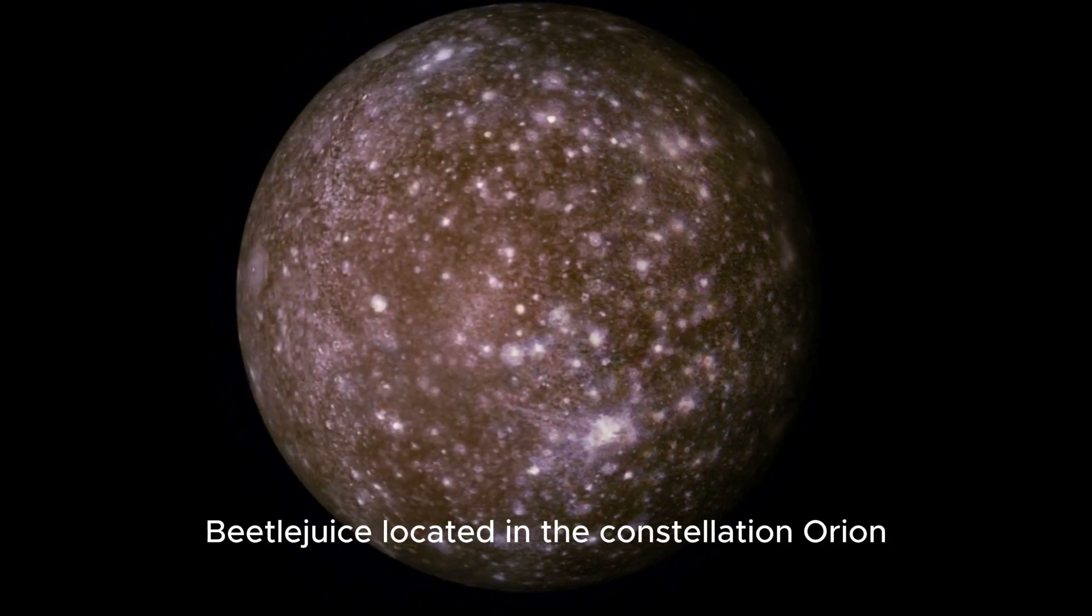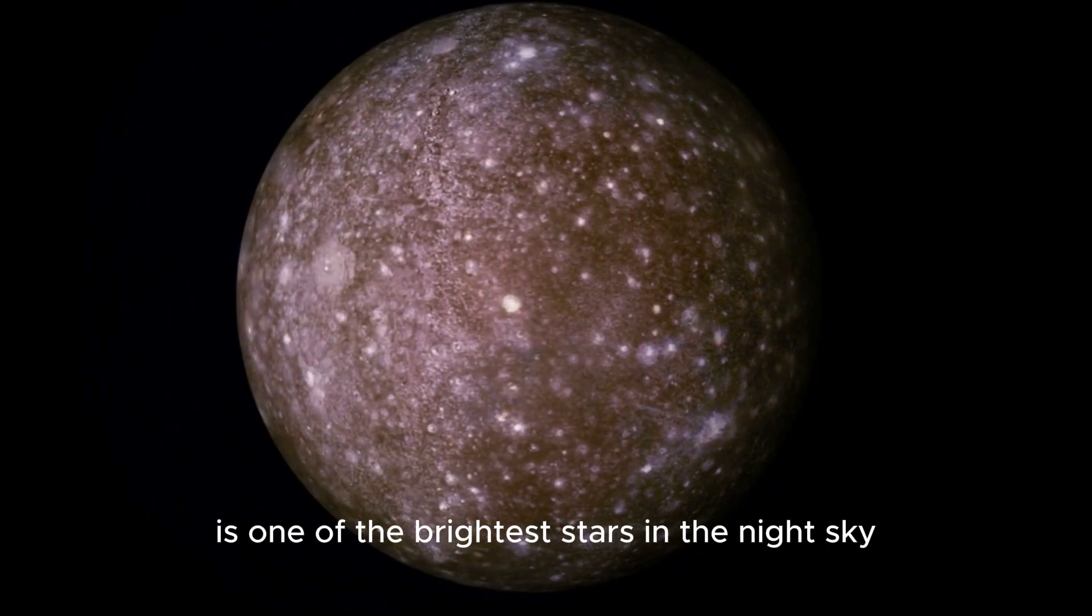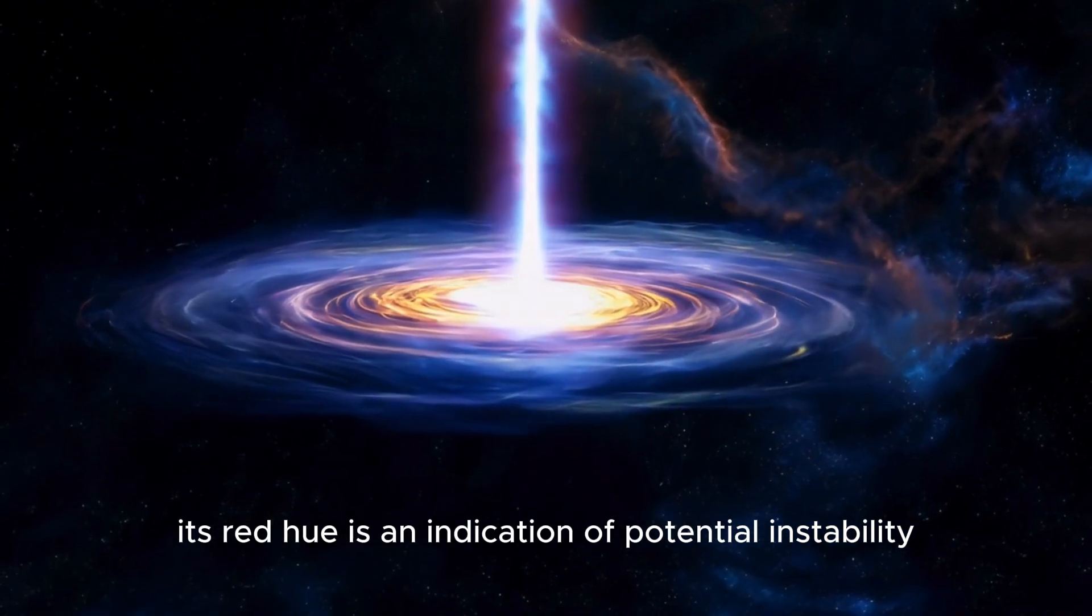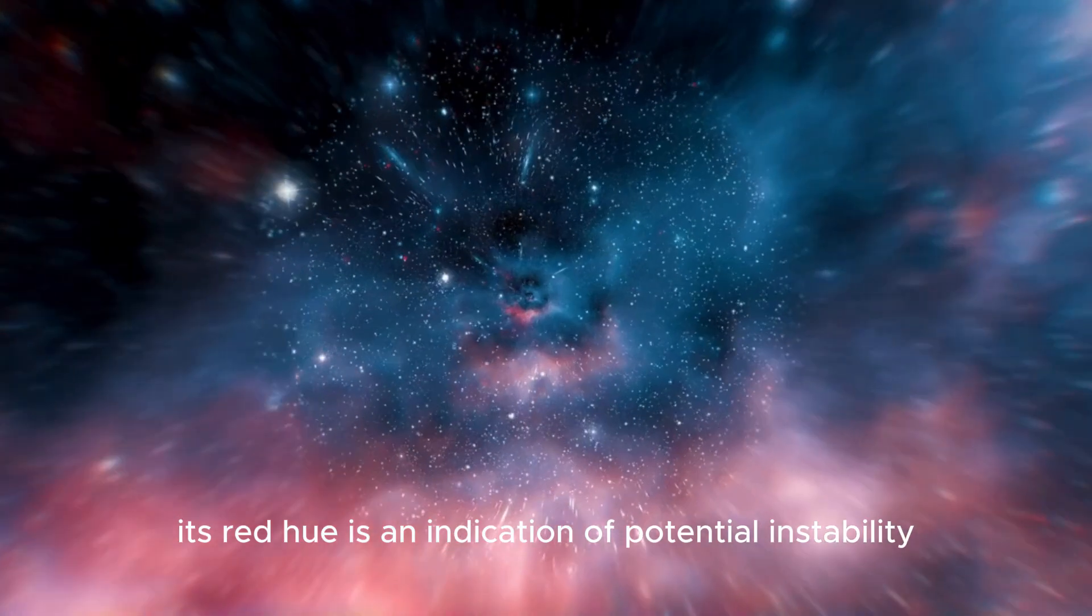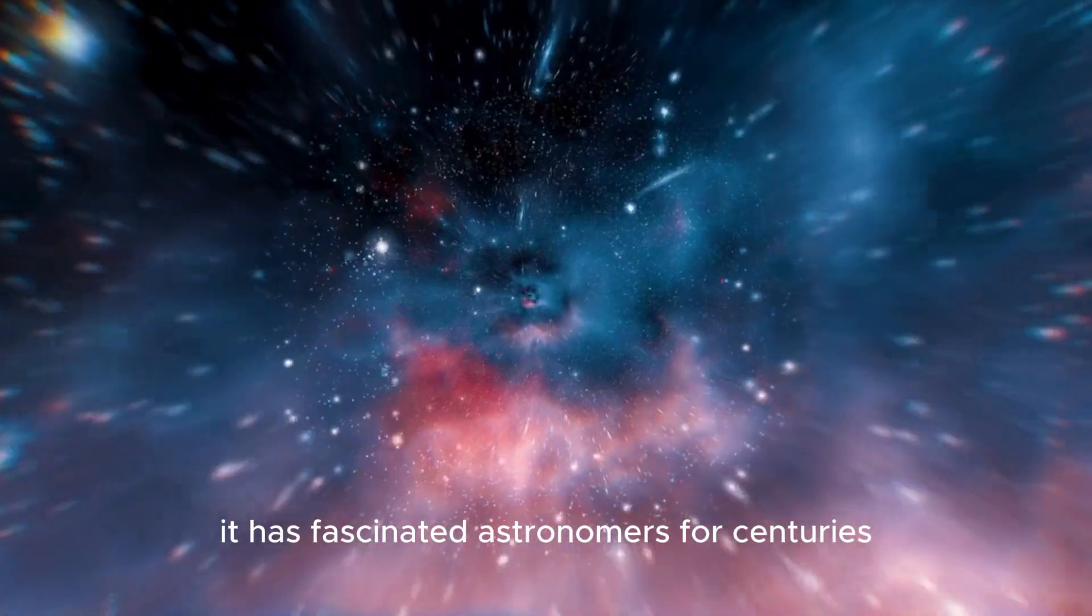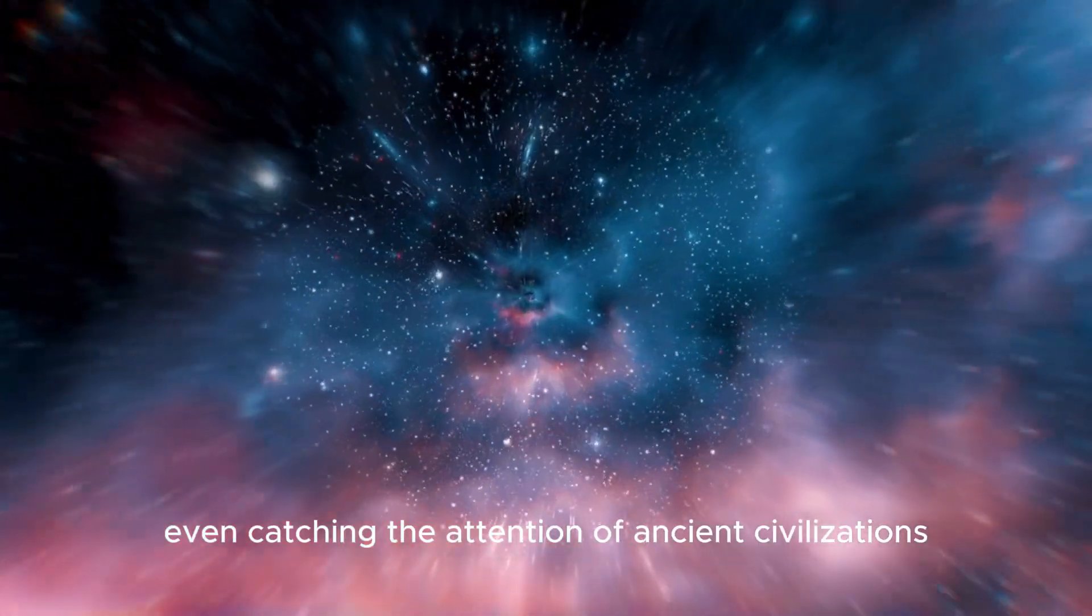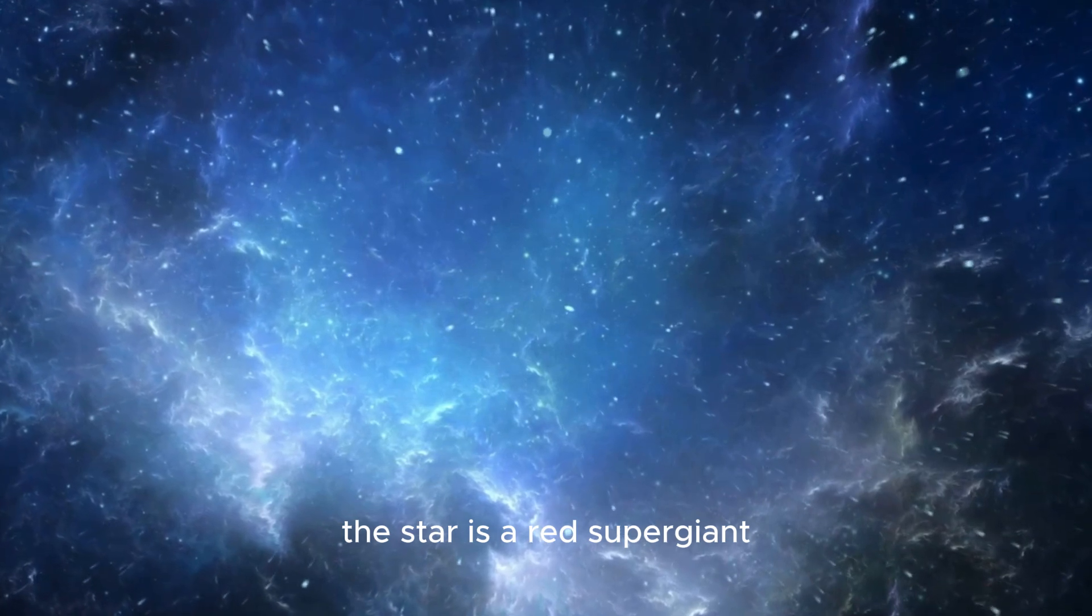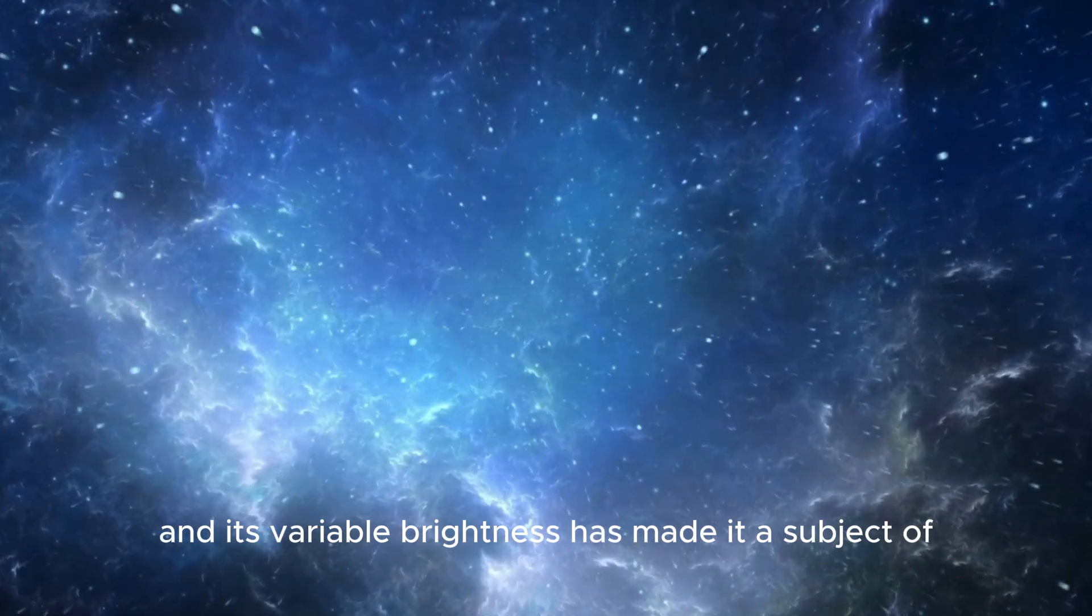Betelgeuse, located in the constellation Orion, is one of the brightest stars in the night sky. Its red hue is an indication of potential instability. It has fascinated astronomers for centuries, even catching the attention of ancient civilizations. The star is a red supergiant, and its variable brightness has made it a subject of continuous study.